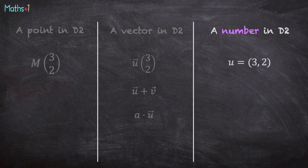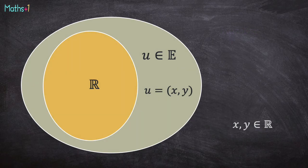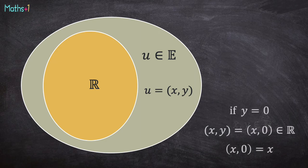The first idea is to write u equals (3, 2), a pair of real numbers. So we obtain a new set which is a superset of the real number set. It is composed of a pair of real numbers (x, y) with x and y are real numbers. And there is a special case. If y is null, well, (x, y) is (x, 0). So we can write (x, 0) is x.